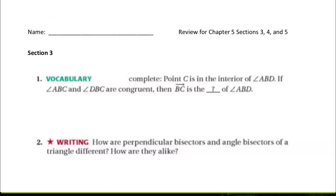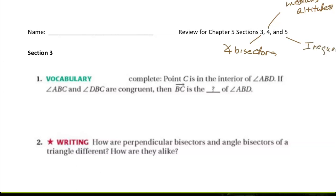In this video, we're going to go over the review for Chapter 5, Sections 3, 4, and 5. So first off, we want to remember what the sections are. Section 3 was all about angle bisectors. Section 4, the medians — we did the centroid activity with the triangle balance. Those medians and altitudes. And then the last was inequalities in triangles.